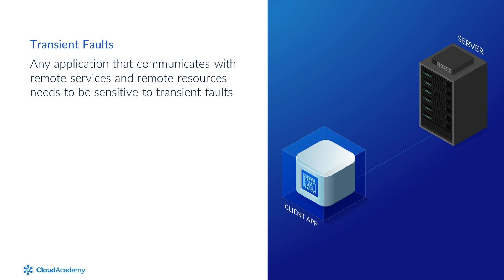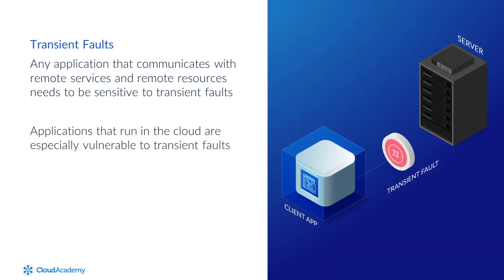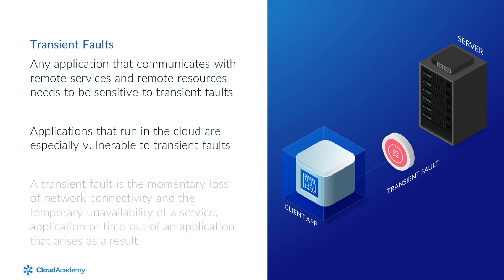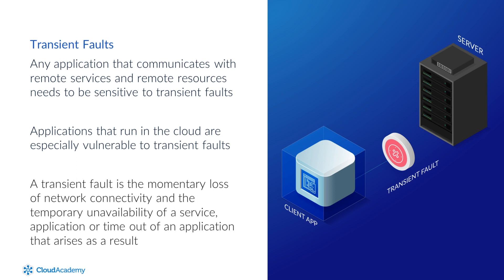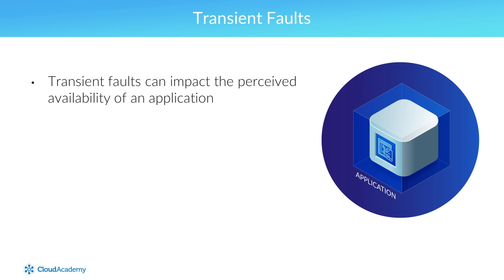Any application that communicates with remote services and resources needs to be sensitive to transient faults. Applications that run in the cloud are especially vulnerable due to the nature of the environment, including inevitable random connectivity issues over the internet. A transient fault is the momentary loss of network connectivity, the temporary unavailability of a service or application, or a timeout that arises as a result. Such transient faults are generally self-correcting, but can impact the perceived availability of an application.